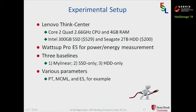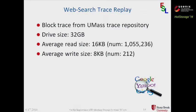We have various system parameters for analysis purposes. PT means promotion threshold, which basically means how many times an extent should be accessed before it is promoted or prefetched. MCML means maximum concurrent migration limit. ES means extent size. We have WebSearch trace replay, which is a block trace from the UMass Trace Repository. Drive size is 32 GB to meet storage requirements. Average read size is 16 KB; average write size is 8 KB. This is a read-intensive workload.